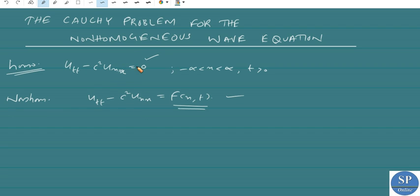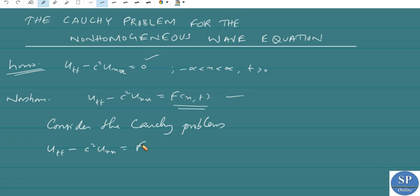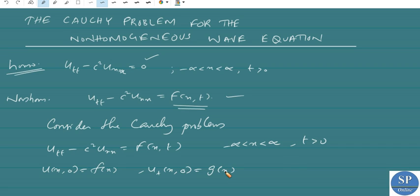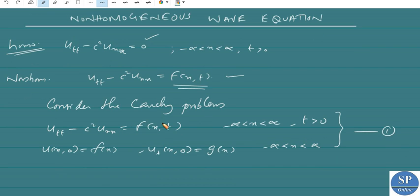Consider the Cauchy problem for the non-homogeneous wave equation: u_tt minus c squared times u_xx equal to f of x comma t, for minus infinity less than x less than infinity, t greater than 0, along with the initial conditions u of x zero equal to f of x and u_t of x zero equal to g of x, for minus infinity less than x less than infinity.